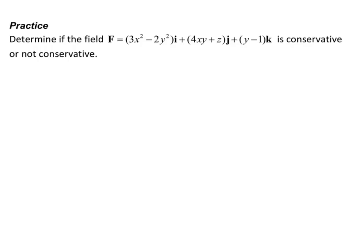Practice: Determine if the field capital F equals 3x squared minus 2y squared, i, plus 4xy plus z, j, plus y minus 1, k, is conservative or not conservative. So first, to use my definition, I'm going to identify m, n, and p. m is the i component, n is the j component, and p is the k component.